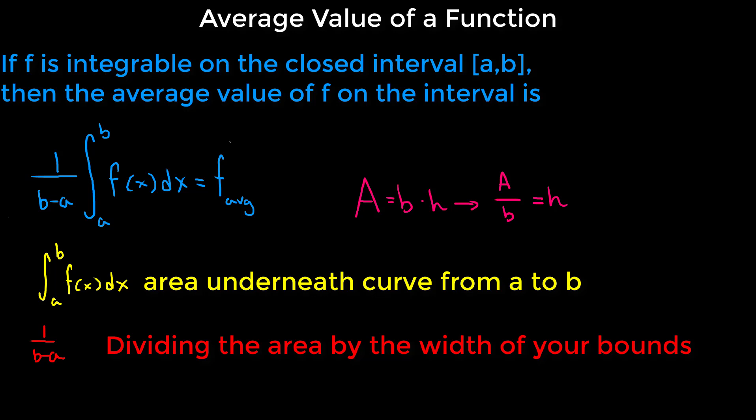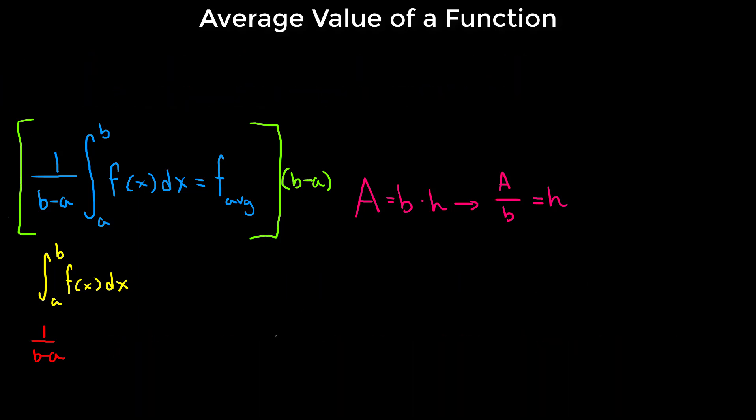And guess what? Let's go ahead and multiply both sides of this equation by b minus a. So if we were multiplying the numerator of both sides by b minus a, we would get the following. We would receive that the definite integral from a to b, because b minus a over b minus a, that would reduce to 1. So we would have the definite integral from a to b of f of x with respect to x is equal to f average multiplied by b minus a.